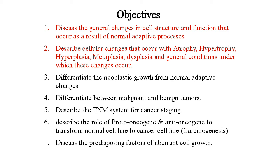Objective summary: Number 1 - discuss the general changes in cell structure and function that occur as a result of normal adaptive processes. Number 2 - describe cellular changes that occur with atrophy, hypertrophy, hyperplasia, metaplasia, dysplasia and the general conditions under which these changes occur.